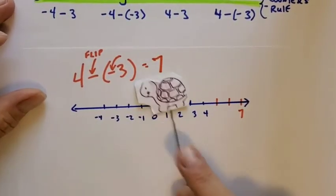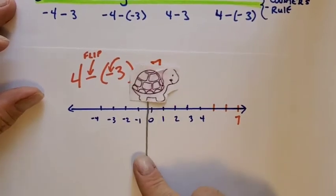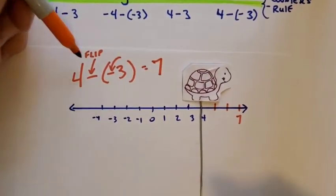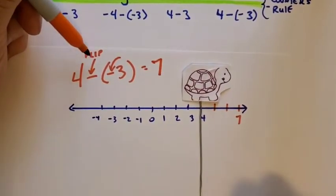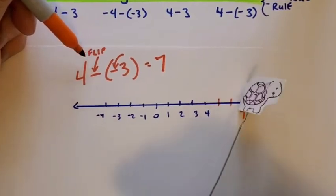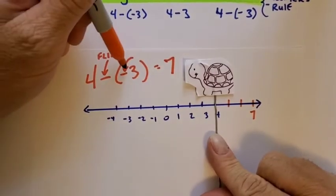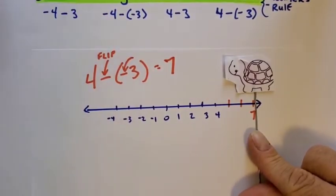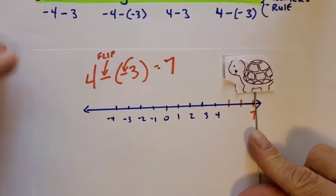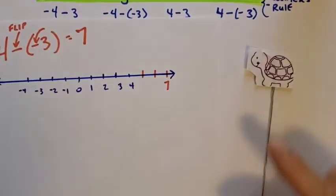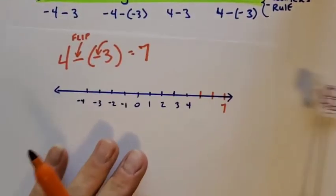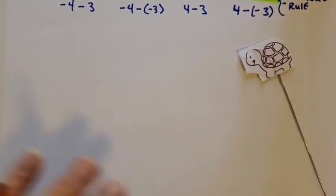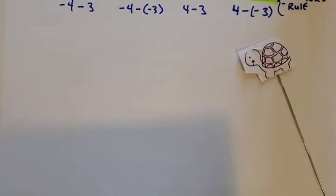I'll do that again real quick. Go forward 4. Flip. Backward 3. So I want you to start thinking — is it like subtraction or what? What's going on here?